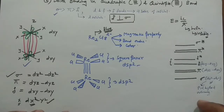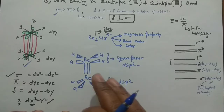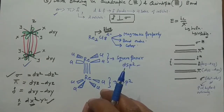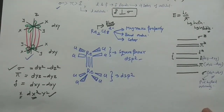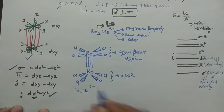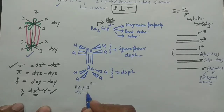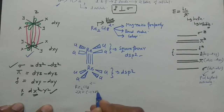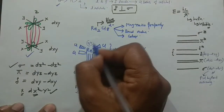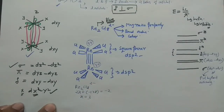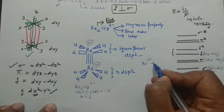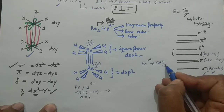Now, how do we decide that the rhenium–rhenium bond order is 4? For Re₂Cl₈²⁻, calculate the oxidation state of rhenium: 2x + (−1)(8) = −2, giving x = +3. So rhenium is in the +3 oxidation state. Rhenium in the +3 oxidation state is a 5d⁴ system.